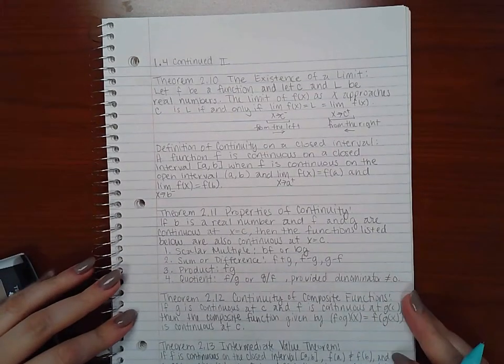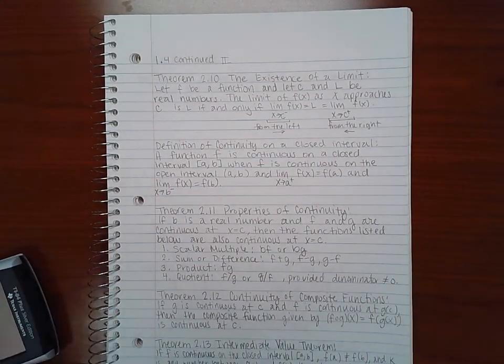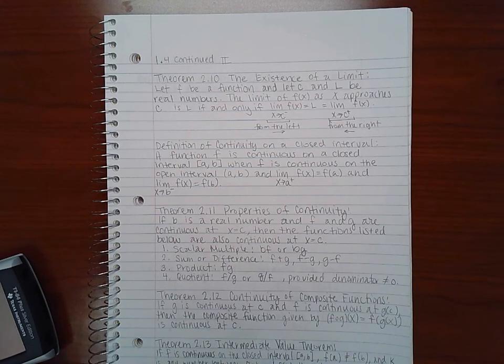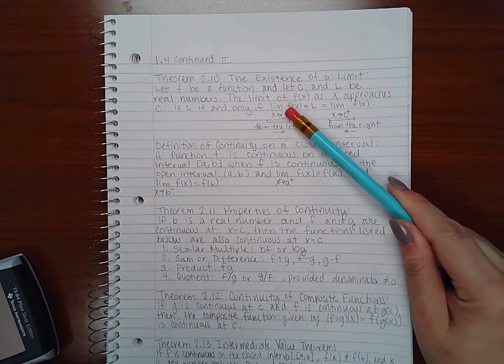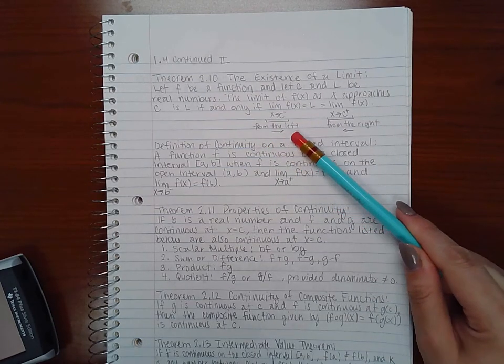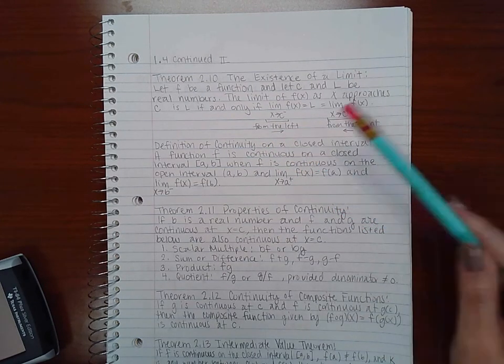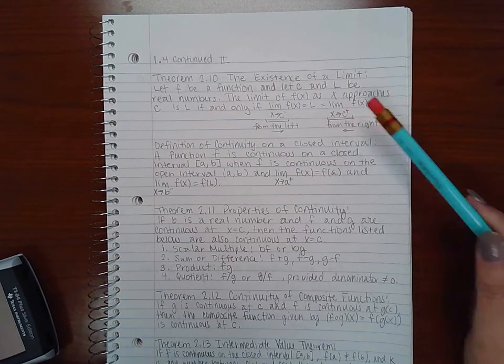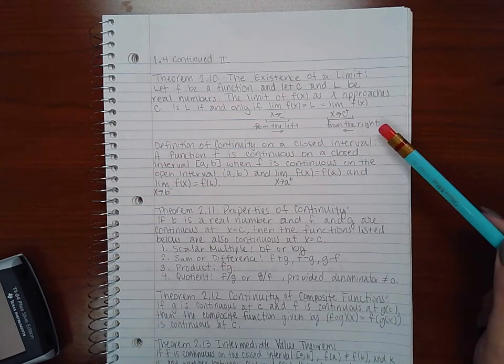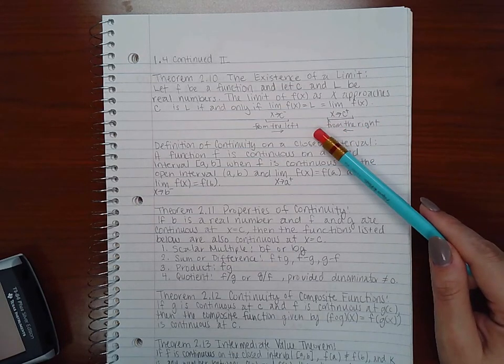Now, theorem 2.10 is the existence of a limit. Let f be a function and let c and l be real numbers. The limit of f as x approaches c is l if and only if x approaches c from the left. The little minus up there means from the left. It means going in this direction toward your c. And the limit as x approaches c with the plus sign means from the right, which means you're going this direction toward your c value.